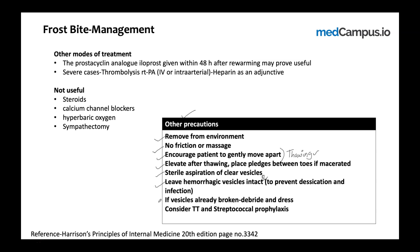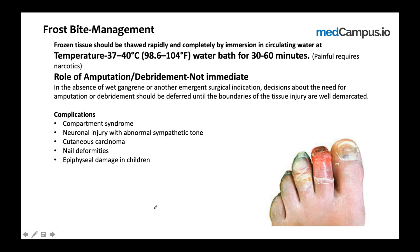If vesicles are already broken, perform debridement and apply sterile dressing with aloe vera gel. During all thawing procedures, consider giving tetanus toxoid (TT) prophylaxis and streptococcal prophylaxis. These are important precautions to follow during management.